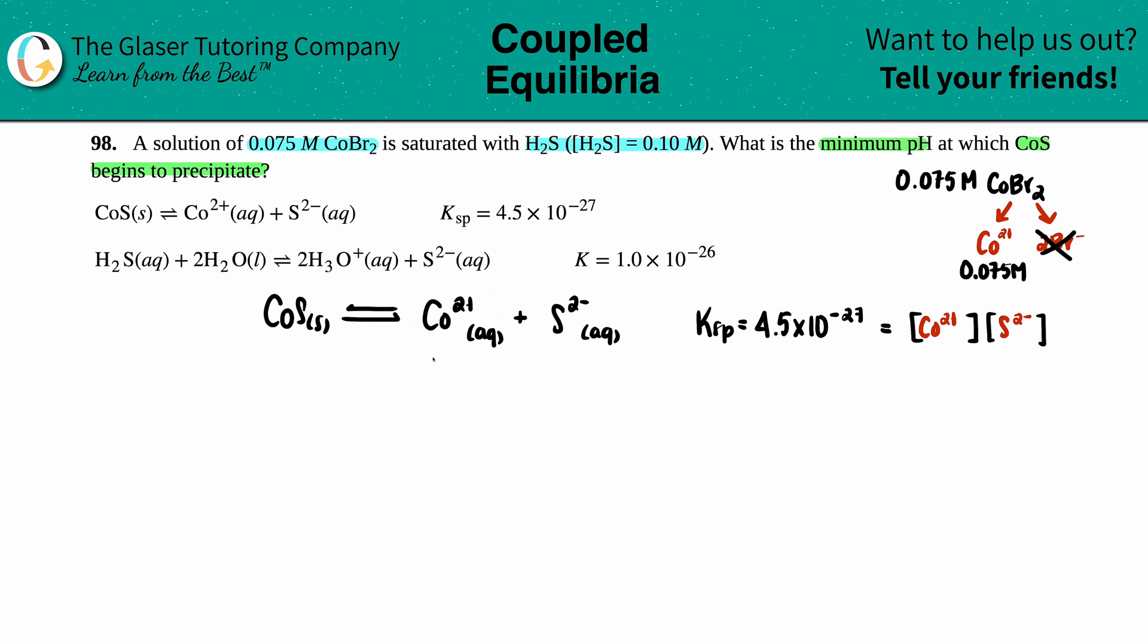There's one CoBr2 for every one Co2+, so if the total concentration is 0.075 molarity, the molarity of Co2+ is also 0.075 molarity. That's the number I'm putting with the cobalt. They didn't tell me anything about S2-, so I'm solving for that. I'll label it as x. So let's solve for x: 4.5 times 10 to the negative 27 equals 0.075 times x. Divide both sides by 0.075.